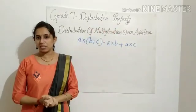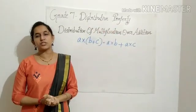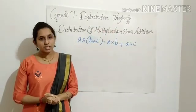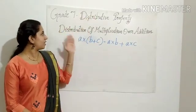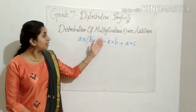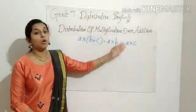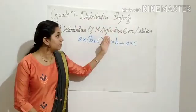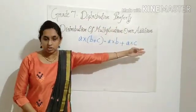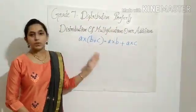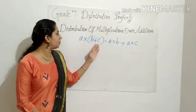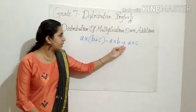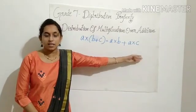Distributive property means we have to distribute something. Let us see what we have to distribute. Under this, the first one is distribution of multiplication over addition. Multiplication over addition. Have a look at this: A into B plus C equal to A into B plus A into C.